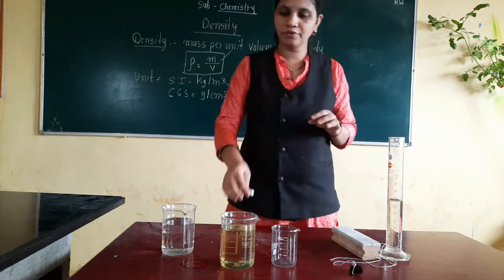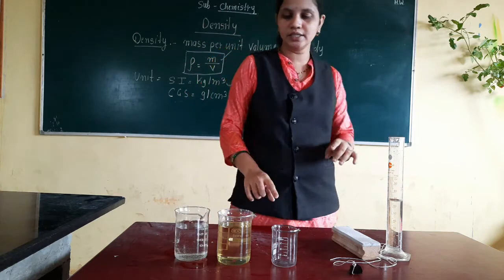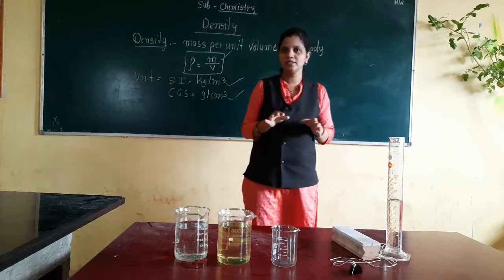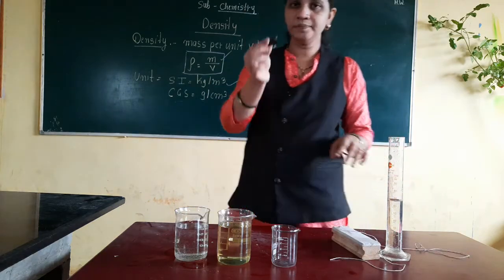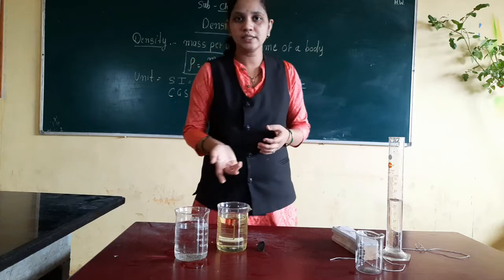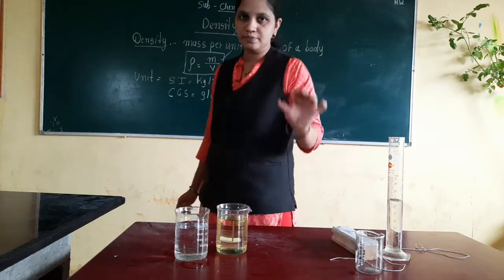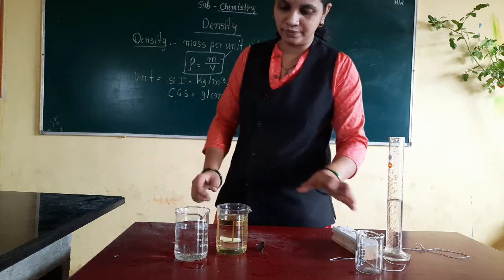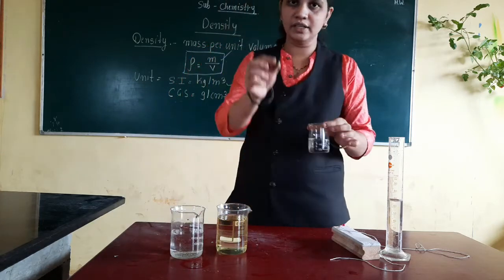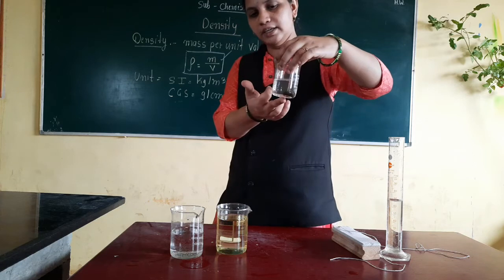In front of you there is a beaker with oil and a beaker with water. We need to compare whose density is more. Here is a stone and this is water. If any substance has more density it will sink in the water. Now just observe — in this beaker we take water, and I am adding this stone. See, I put this stone in — the stone settles down. It sinks in the water.